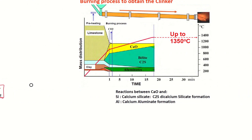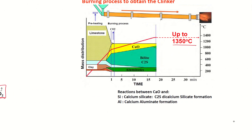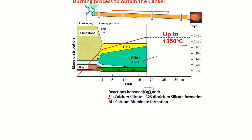If we increase the temperature even further, up to 1350 degrees Celsius, there's a reaction that takes place between the calcium oxide produced from the decarbonation process plus your silicates. The silicates come from the clay, from the quartz — from the sand that you had mixed originally. A reaction takes place and you start noticing the formation of C2S, the main compound produced at 1350 degrees Celsius.